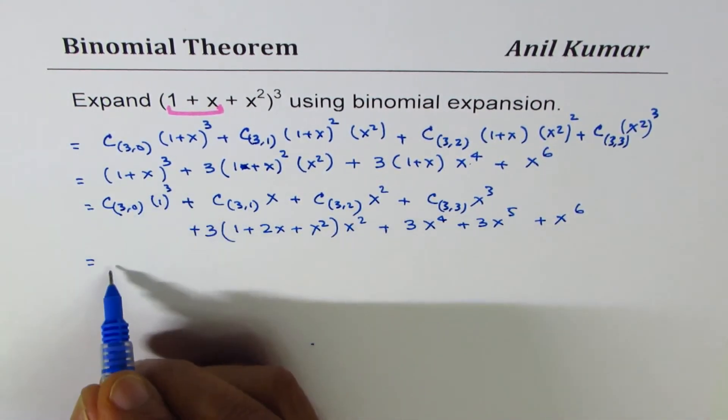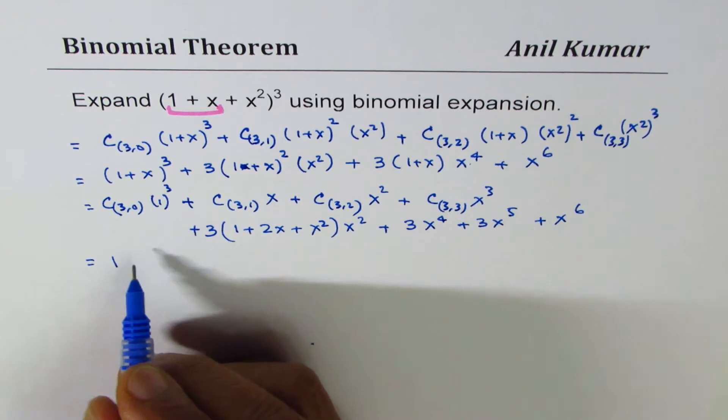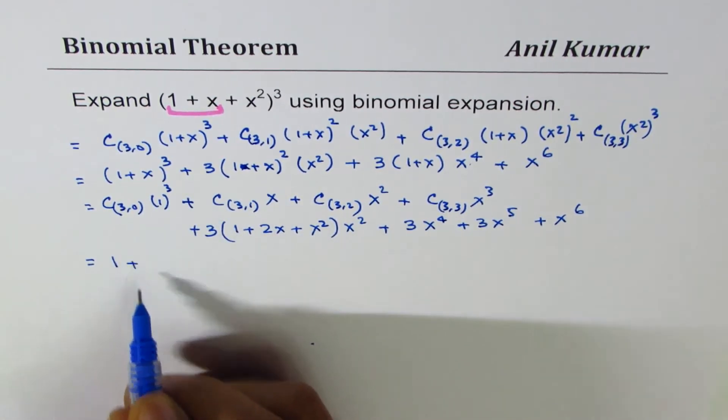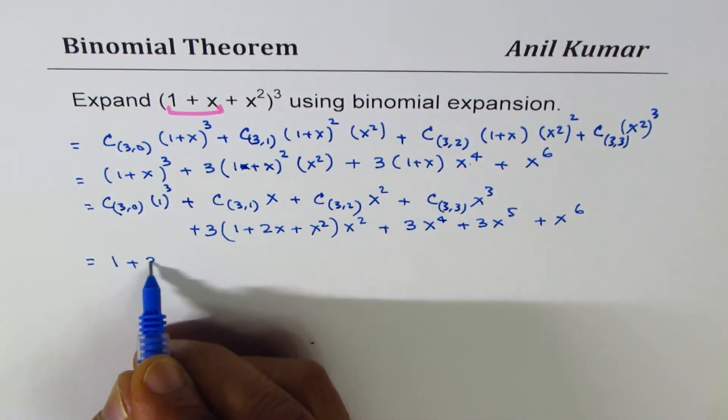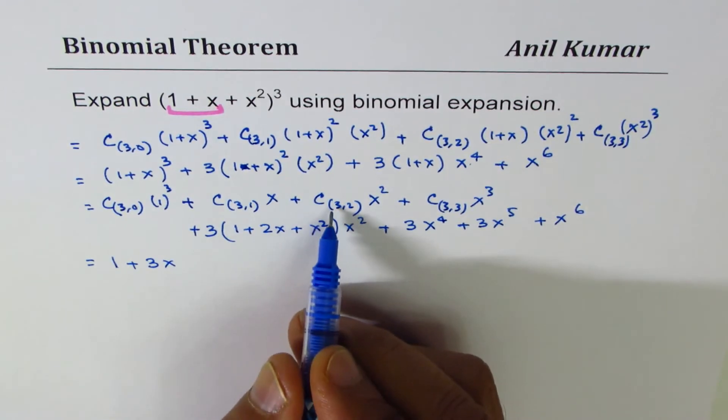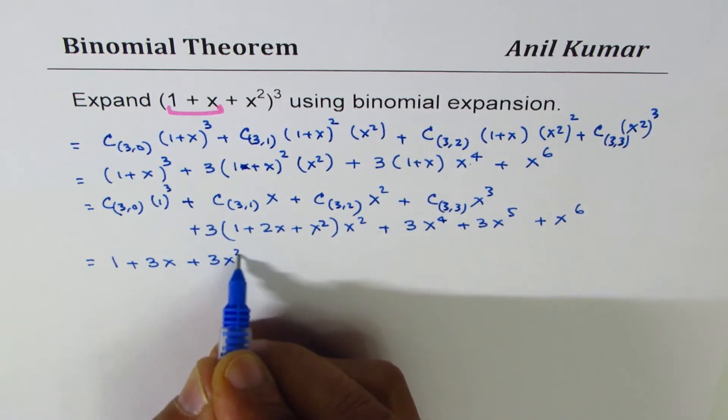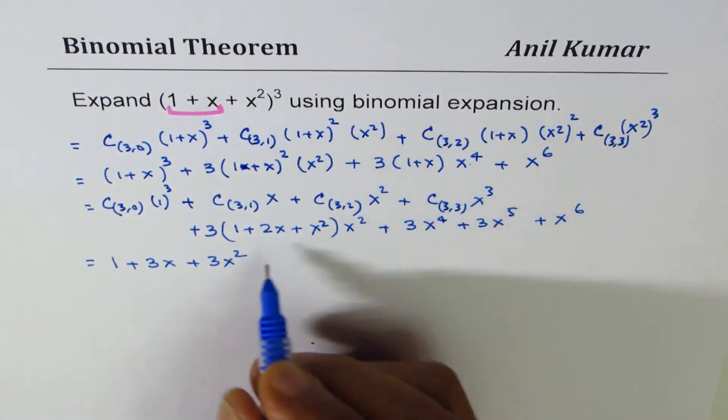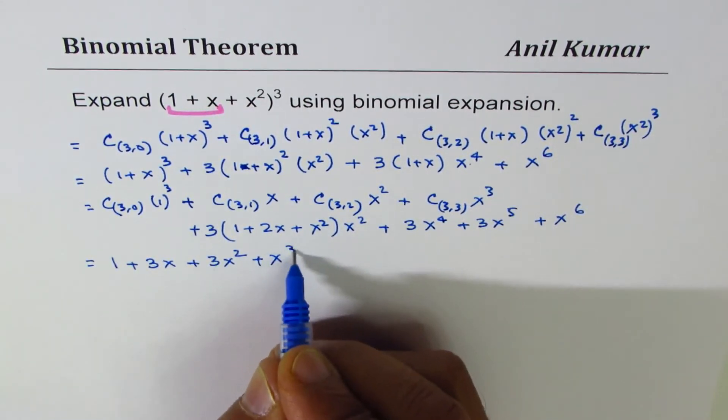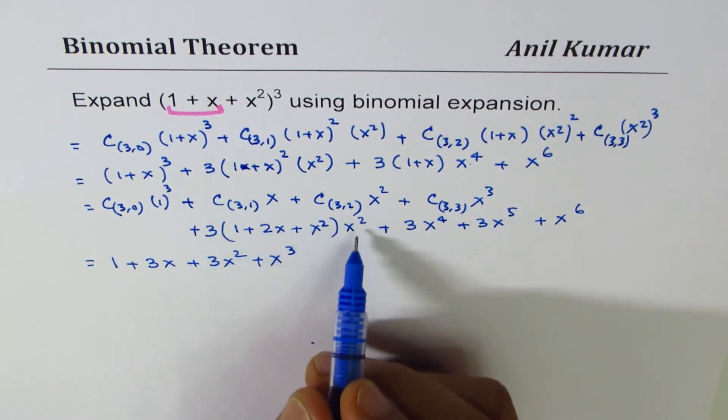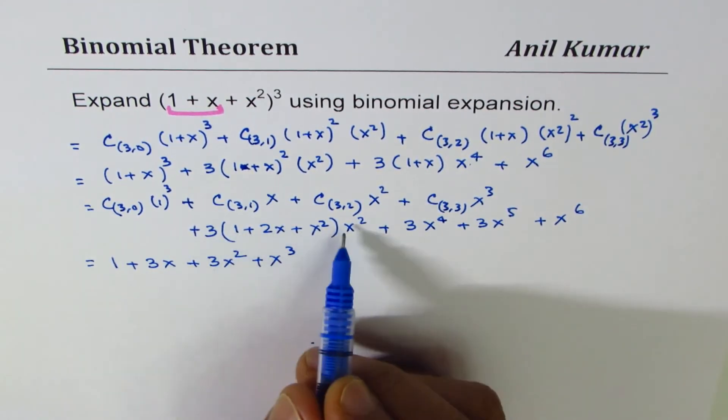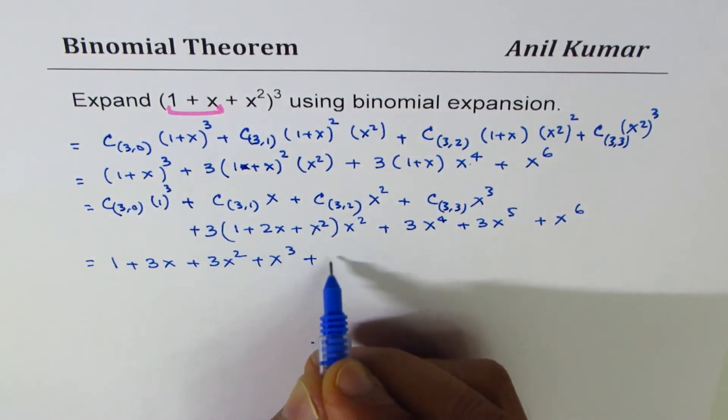Now this is 1, so we get 1 plus 3x and here we get 3x², then it's x³ plus x³. Let us expand this, we'll multiply everything by 3x² so we get plus 3x².